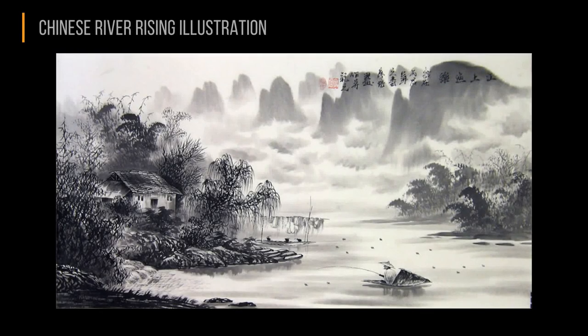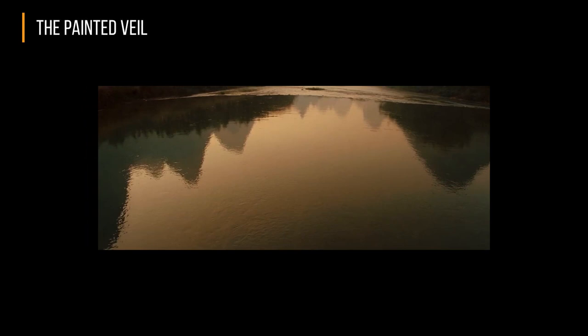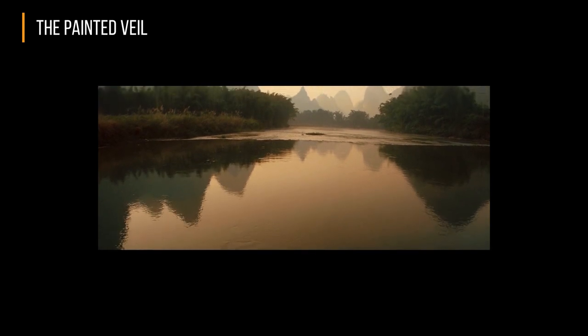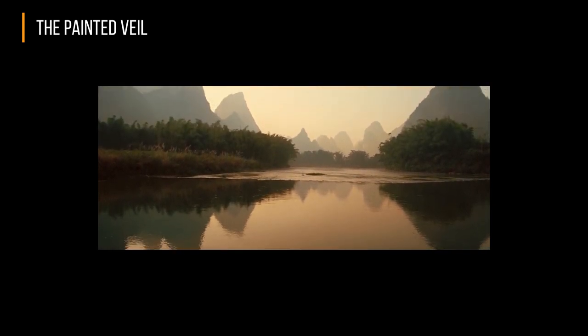Haze is the use of atmosphere or smoke to create distance between your front object and your back object. You can see in this Chinese painting that the fisherman in the foreground is very sharp relative to the mountains in the background — automatically our brain makes the assumption that the mountains must be further away. This gives the illusion of depth. In the movie The Painted Veil, you'll notice that the mountains in the foreground are much easier to see than the mountains in the background. This is an effective tool of haze.